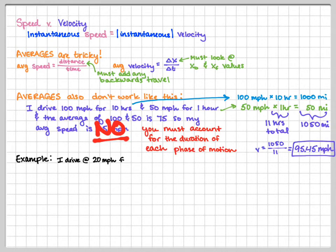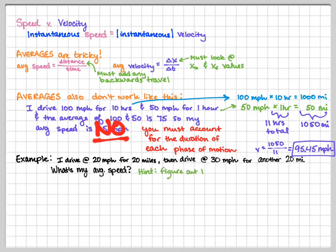Here's an example for you to try. I drive at 20 miles per hour for 20 miles, then 30 miles per hour for another 20 miles. What is my average speed? Here's a hint. Figure out the total duration. Go ahead and pause the video for a moment. Work that out. And when you're ready, you can hit play.